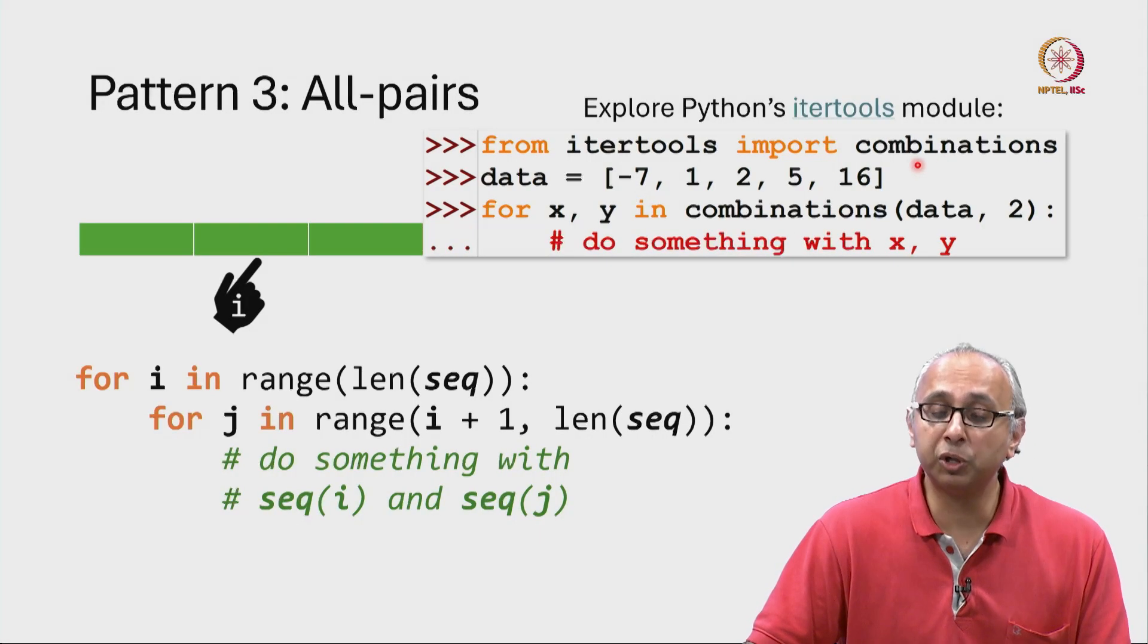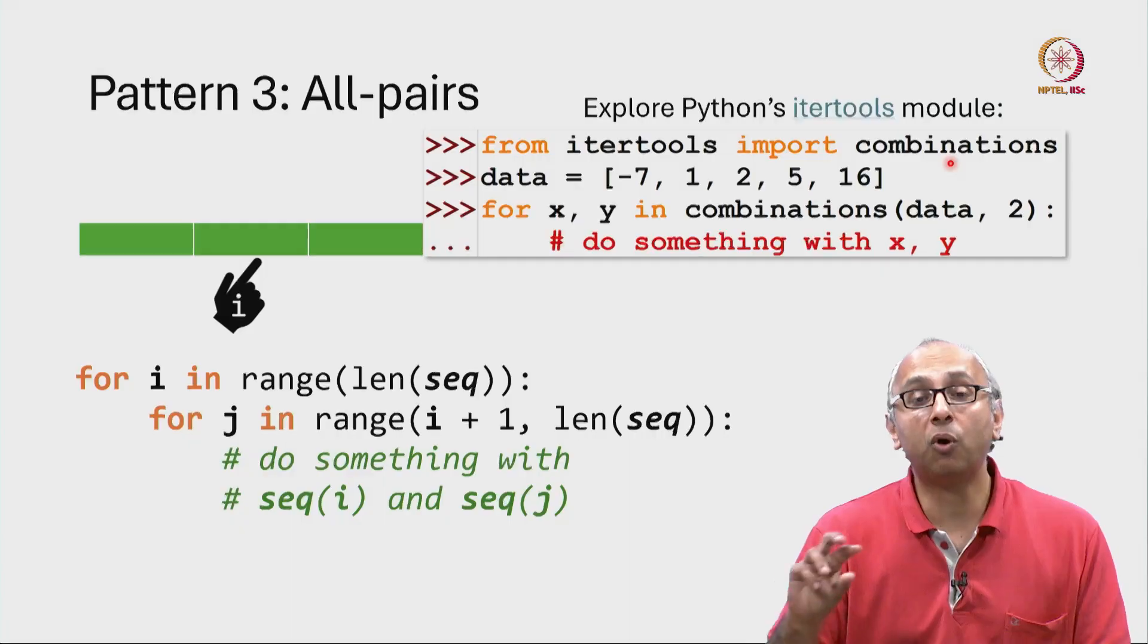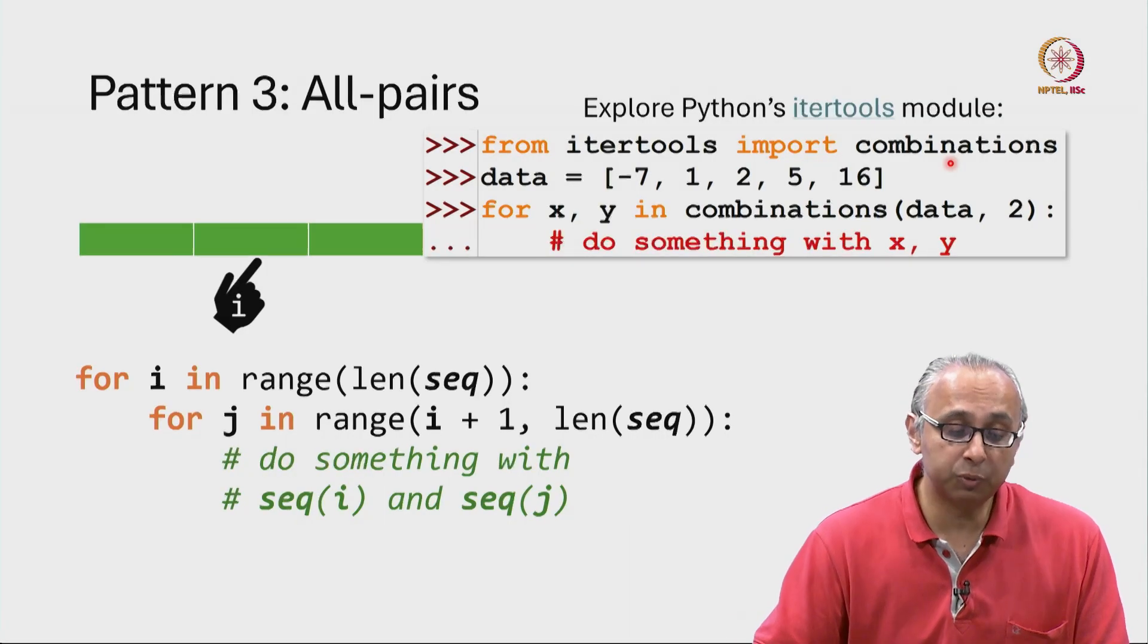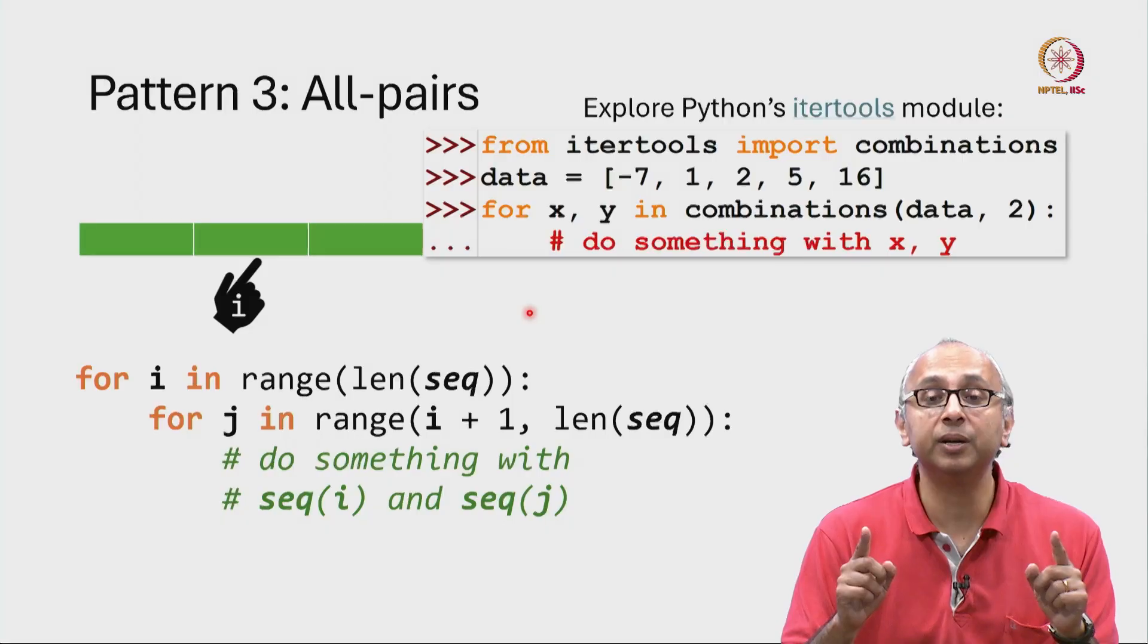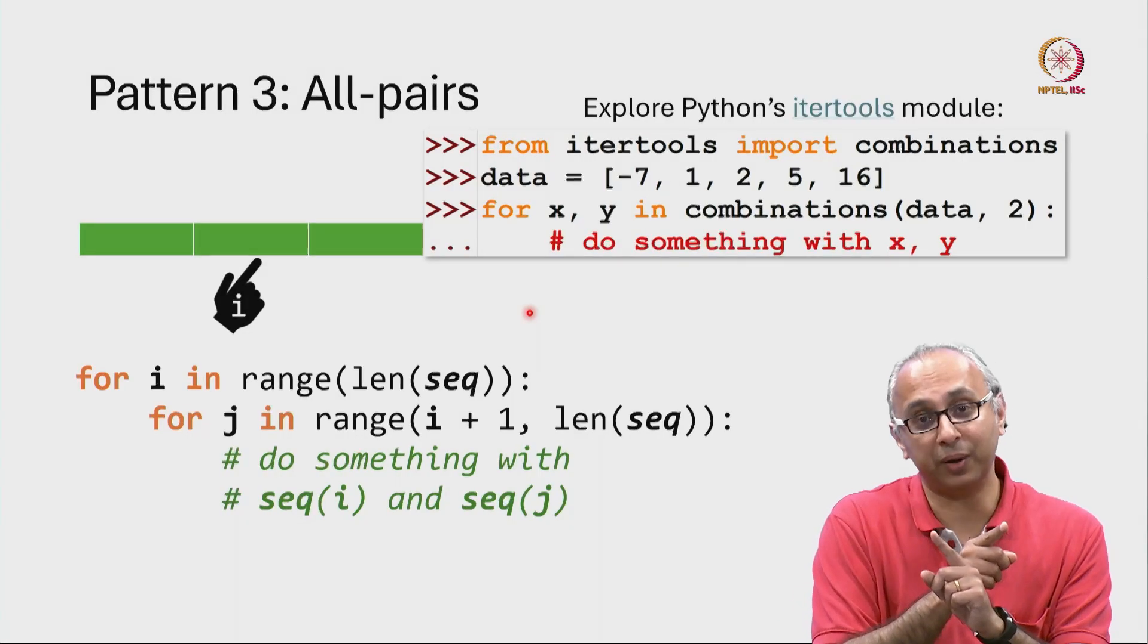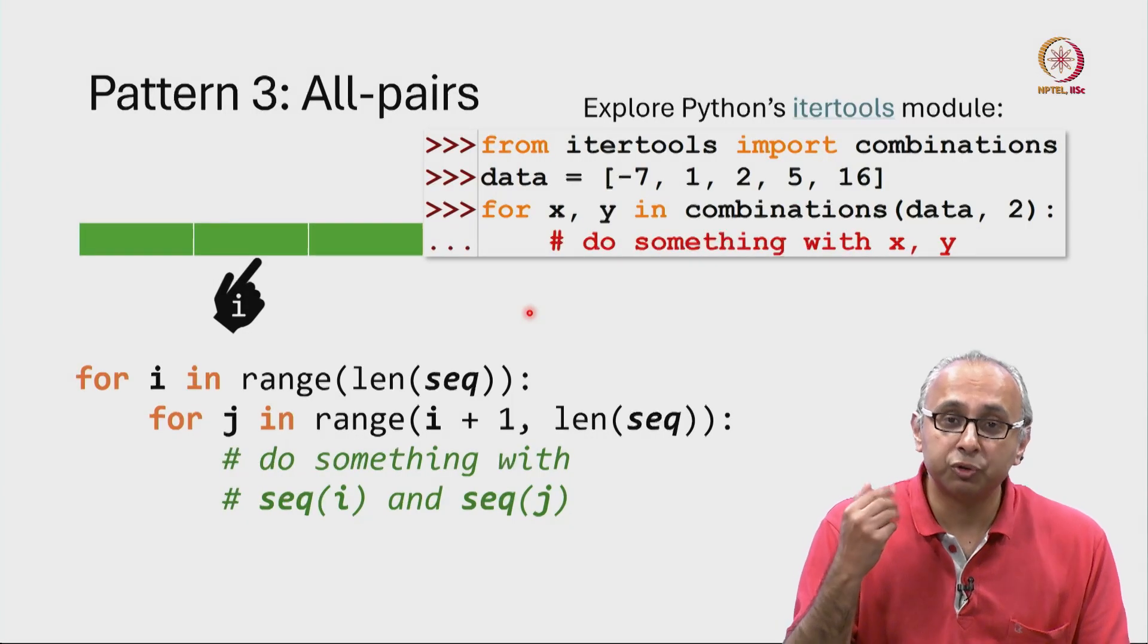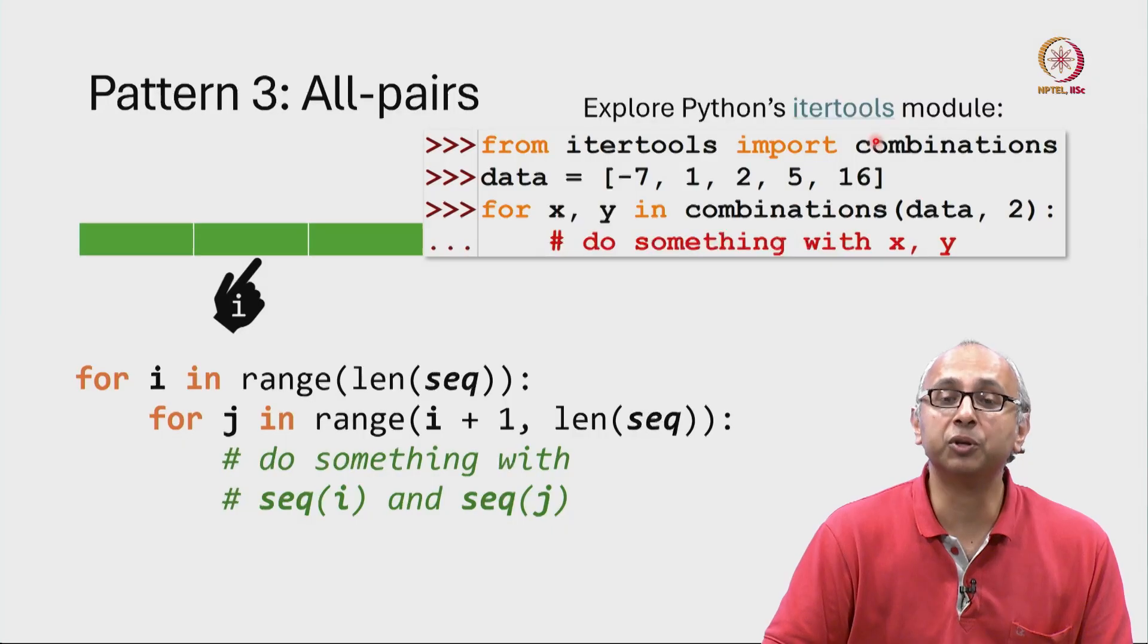In this module, you can also import other functions such as permutations. So then you can examine all permutations. This will include things like the i finger and the j finger but also the other way around. So try and explore this itertools module. It has lots of very powerful functions.